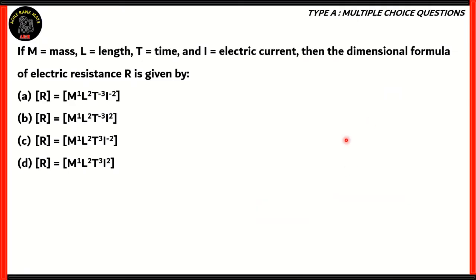Here comes our first question. If mass is M, L is length, T is time, and I is electric current, then the dimensional formula of electric resistance R is given by one of the four options. Which of these is the correct one?